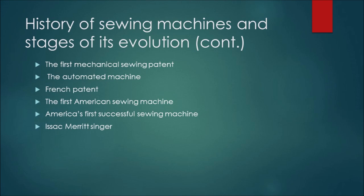According to Mary Pellis, in 1804, a French patent was granted to Thomas Stone and James Henderson for a machine that emulated hand sewing. The first American sewing machine was invented in 1818 by President Dodge and John Knowles.